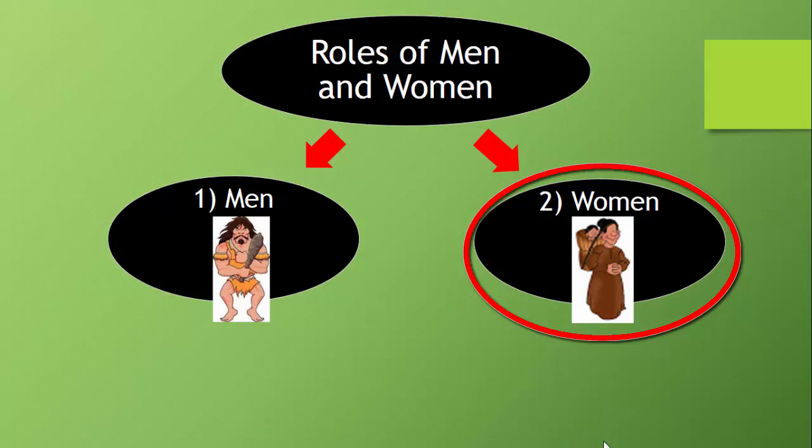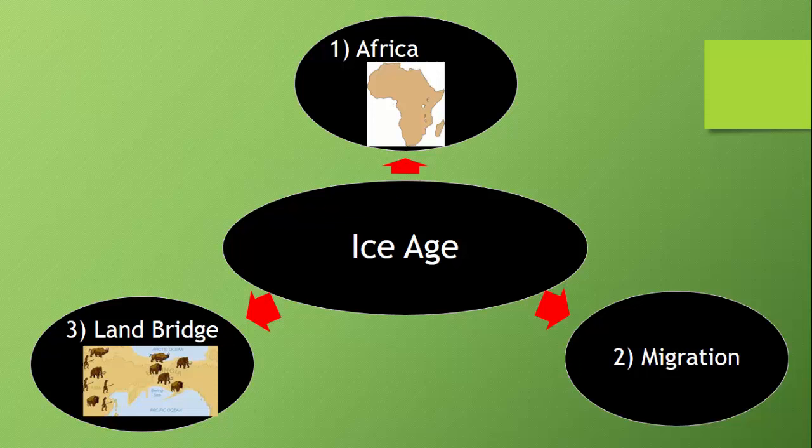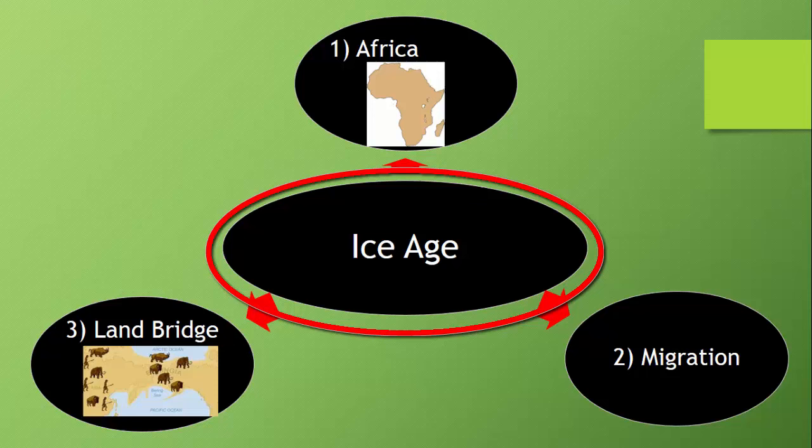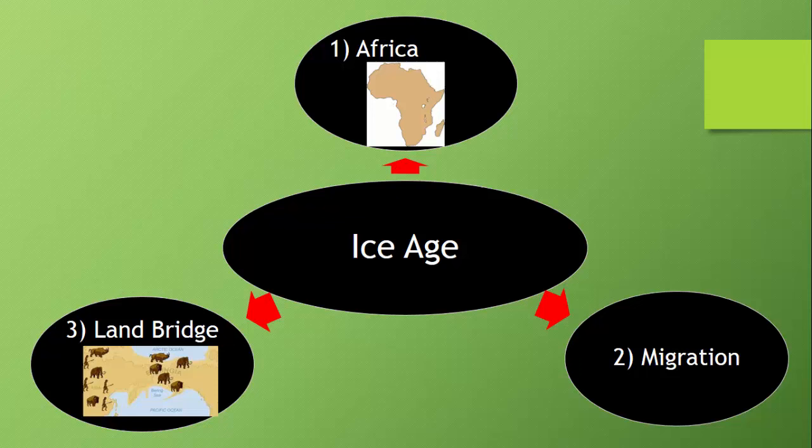Another thing about the Stone Age period: they also lived during what we call the Ice Age. The Ice Age was 1.6 million years ago, when the Earth began to experience long periods of freezing, causing glaciers to cover much of the Earth.